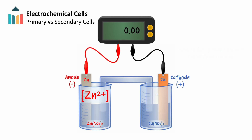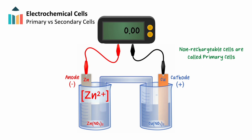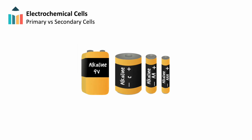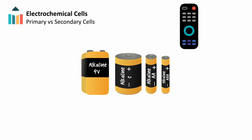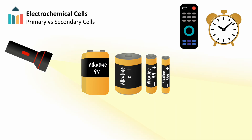Trying to recharge a voltaic cell that contains an irreversible redox reaction will not work — these types of cells are called primary cells. A disposable alkaline battery is an example of a primary cell. In everyday life, we may use non-rechargeable cells like these in TV remotes, clocks, or flashlights. Since these cells cannot be recharged, they must be replaced when they can no longer supply power.